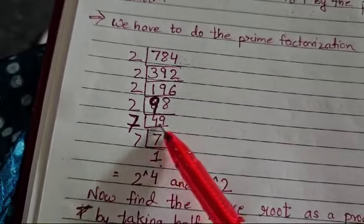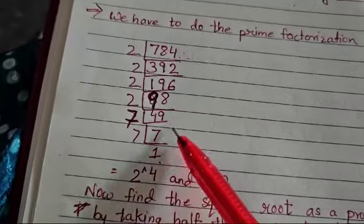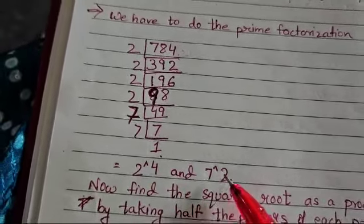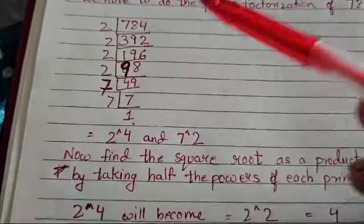Now 49 is not divisible by 2. It is divisible by 7. 7 sevens are 49 and 7 ones are 7, so you get 2 to the power of 4 and 7 to the power of 2 as prime factors for the number 784.